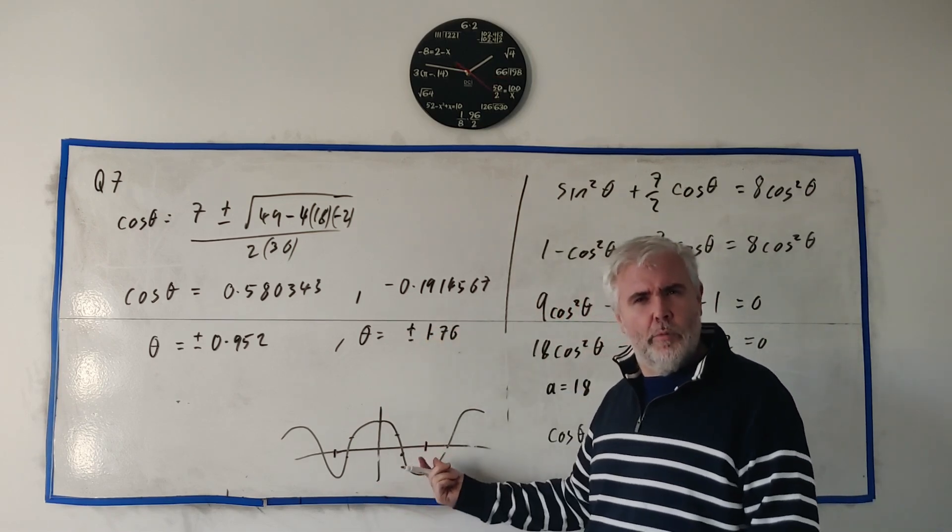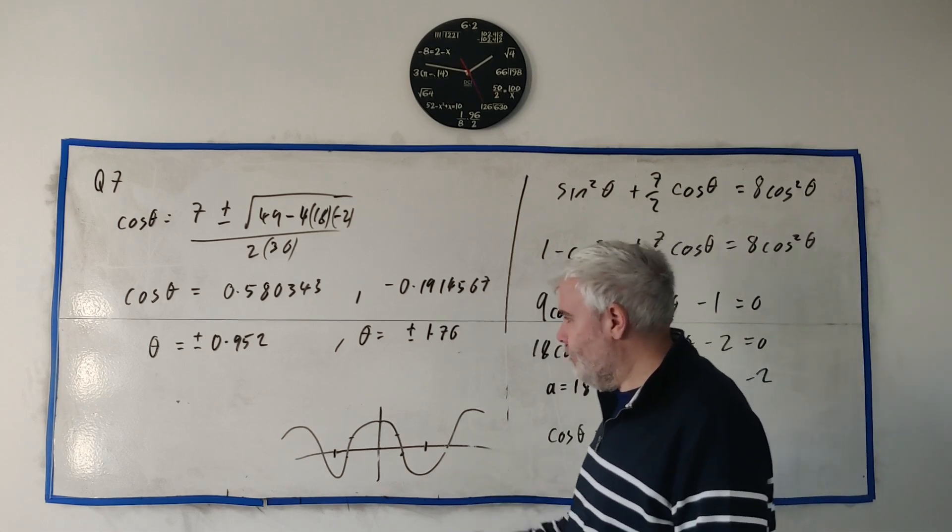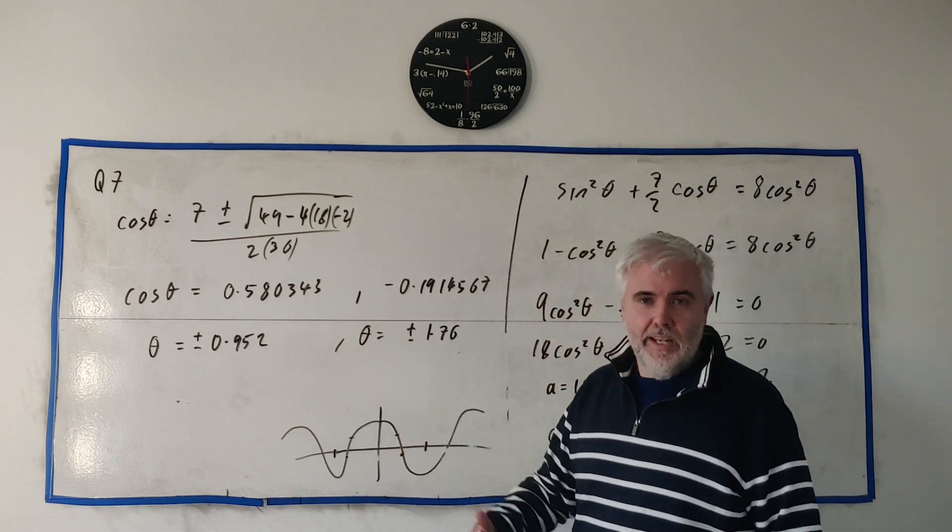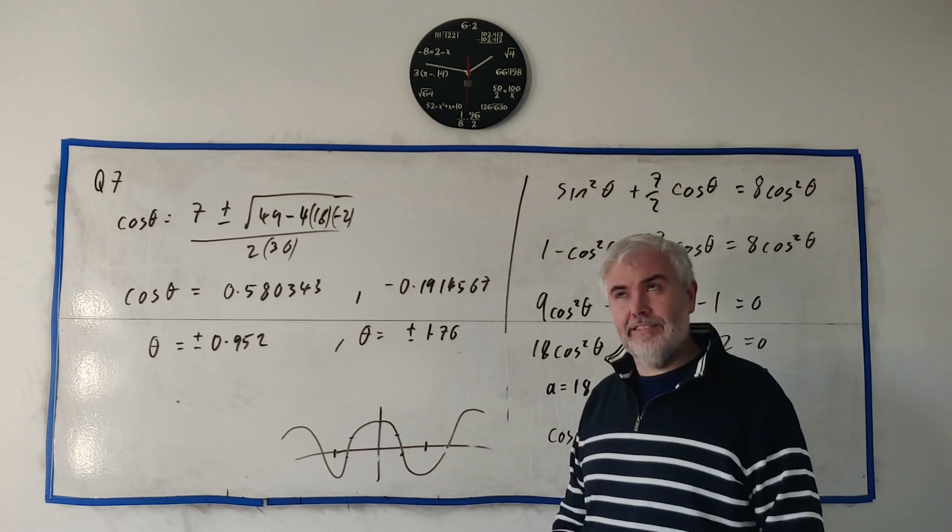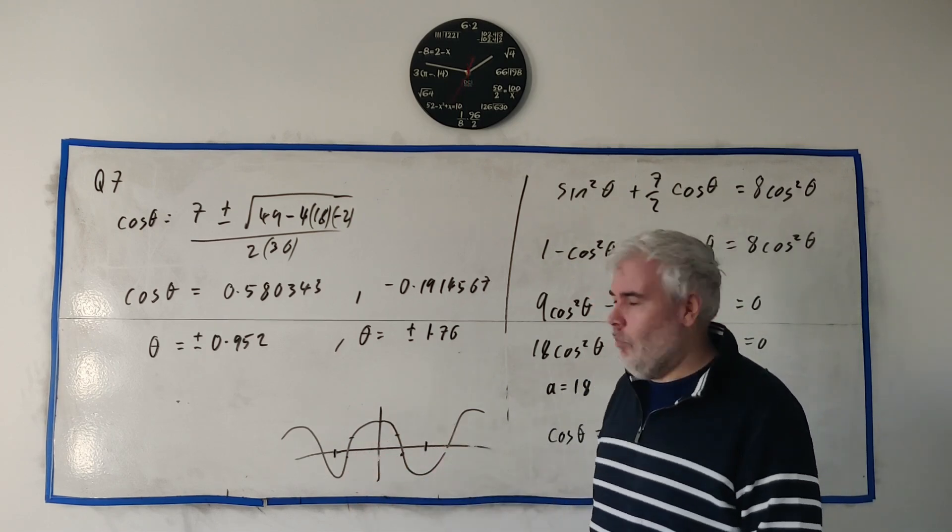Also symmetrical. So just plus or minus that guy here. Just be careful though. It doesn't always work out that nice. If it had been sine, you would have ended up having to add π. Or for tangent, I guess, would it be add π as well. I always like to draw the picture to figure out what I'm doing.